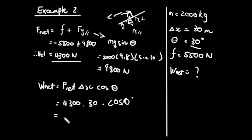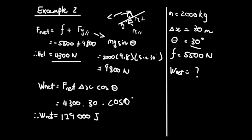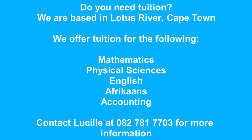Punching that into the calculator gives us a total net work done of 129,000 joules. That's the net work done by both the frictional force and the parallel gravitational component acting on the truck as it free-rolls down the inclined plane. Thank you.